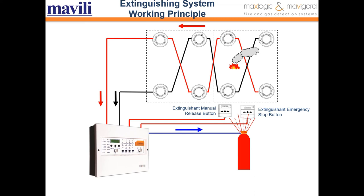As you can see in the animation, if fire is detected in this area — there are four detectors for this area — and all detectors are in fire alarm, then as you know both the black line and the red line are in fire alarm, and the extinguishing process starts. If only the red line is sending a signal, that will not start the extinguishing process.